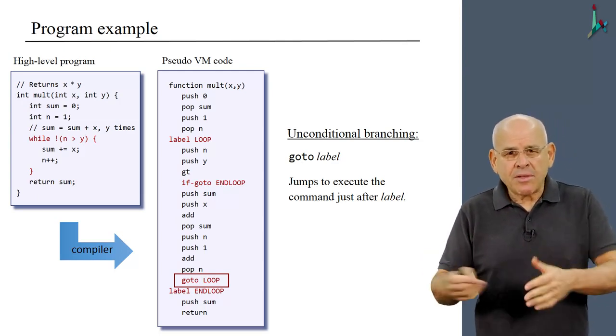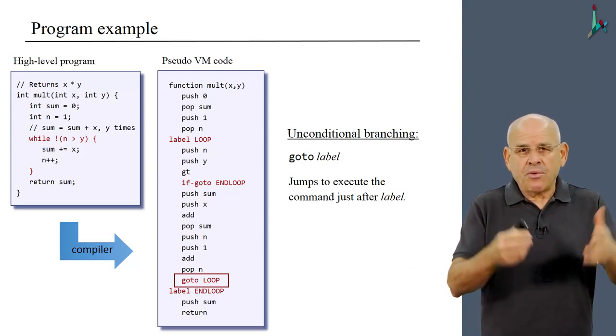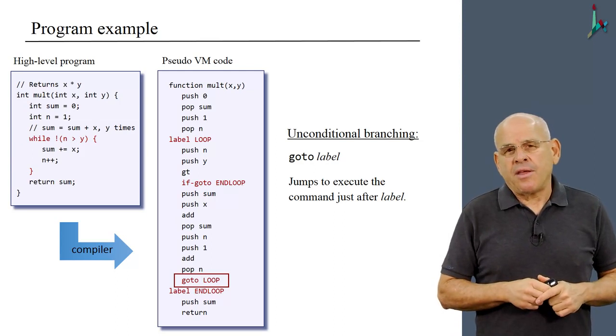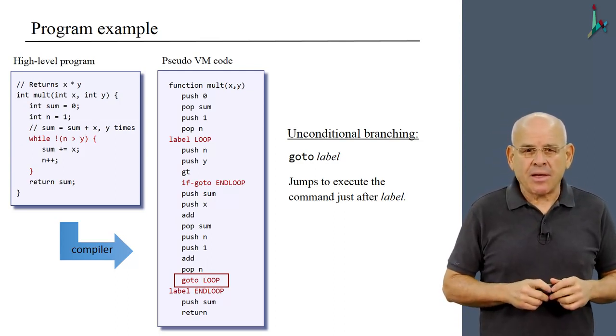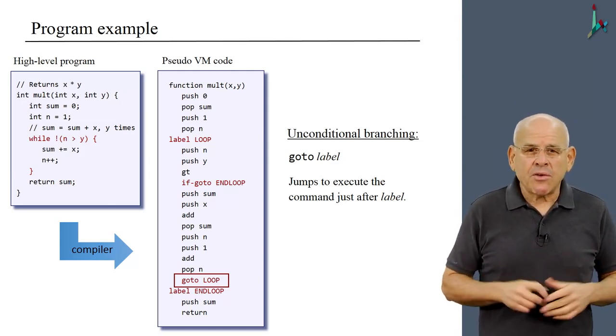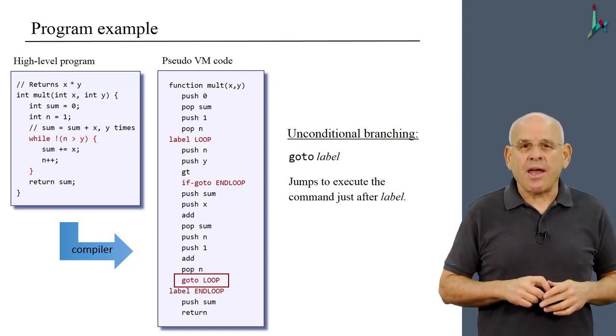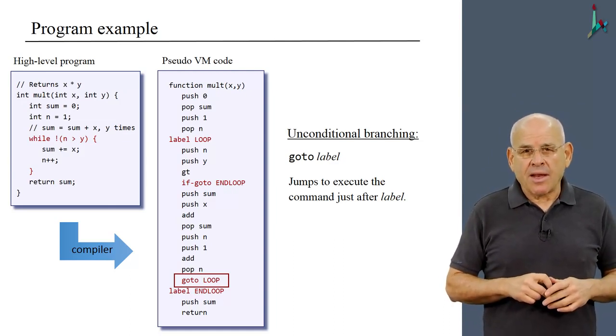You say goto label and you expect the computer to jump to execute the command just after label in the code. So if you say goto loop, the next command that will be executed is push n, because that's the command just after the label loop.